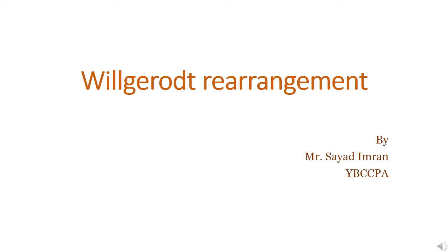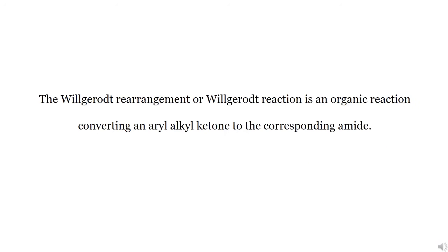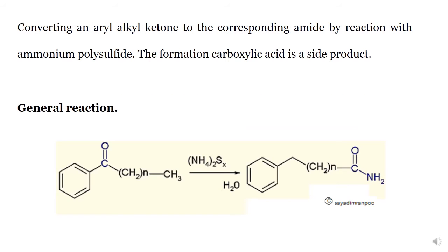Wilgiroth Rearrangement, also called Wilgiroth Reaction, is a conversion of aryl alkyl ketone to the corresponding amide. In this reaction, the substrate — that is, aryl alkyl ketone — is treated with ammonium polysulphide to give the corresponding amide.